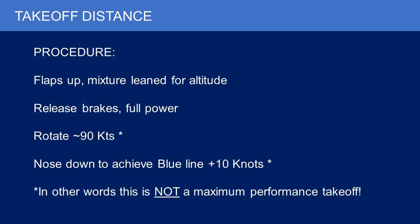The procedure for this data: flaps up, mixture leaned for the altitude. I'd release the brakes, smoothly apply full power — but not all at once. I'd rotate around 90 knots, which is just below blue line, then keep the nose down to accelerate to blue line plus 10 knots. The asterisks note that this is not a maximum performance takeoff — this is a maximum energy takeoff. I'm trying to get as much excess airspeed as possible in case I lose an engine.